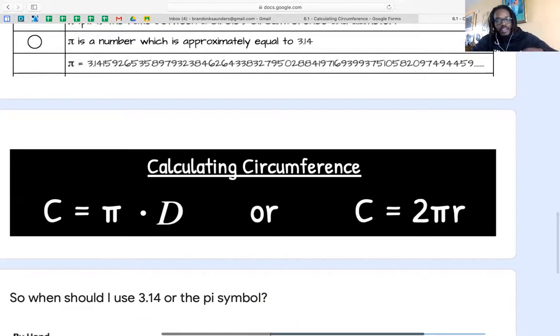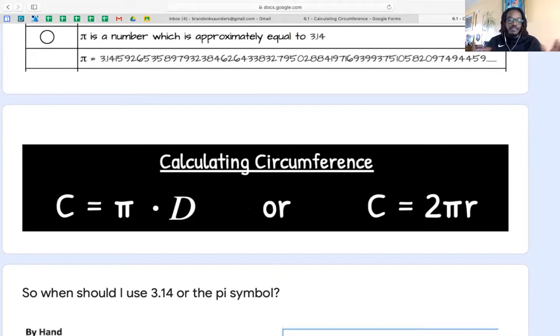Here are the formulas that we need for circles. So circumference is equal to pi times diameter, or circumference is equal to 2 pi r, or 2 pi times radius. I like to just say 2 pi r or pi d.